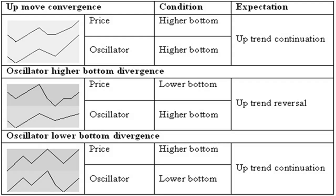Looking at the lows of the oscillator and comparing them with the lows in price, you can see three different situations. When the price and oscillator make higher or equal bottoms, they converge. Until there is no other indication, the most probable price move is a continuation of the uptrend.